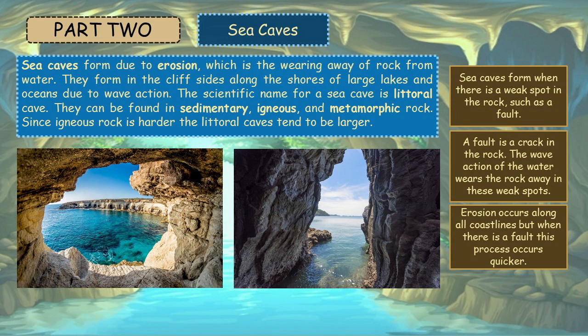The scientific name for a sea cave is littoral cave. They can be found in sedimentary, igneous, and metamorphic rock. Since igneous rock is harder, the littoral caves tend to be bigger. Sea caves form when there is a weak spot in the rock, such as a fault. A fault is a crack in the rock. The wave action of the water wears the rock away in these weak spots. Erosion occurs along all coastlines, but when there is a fault, this process occurs quicker.